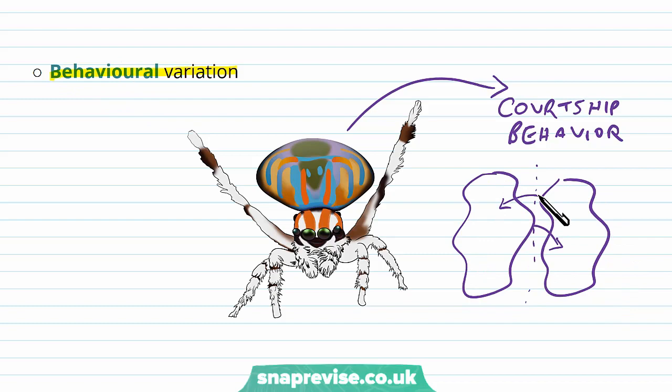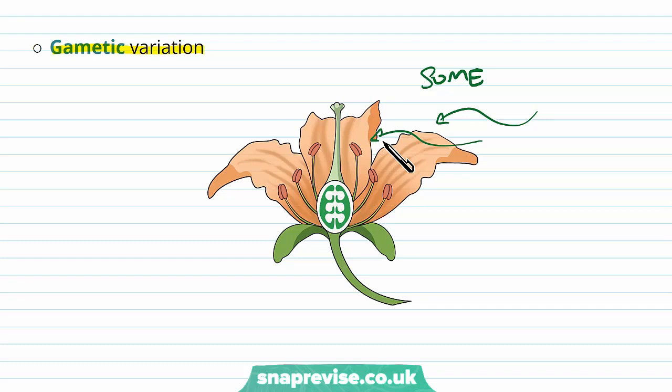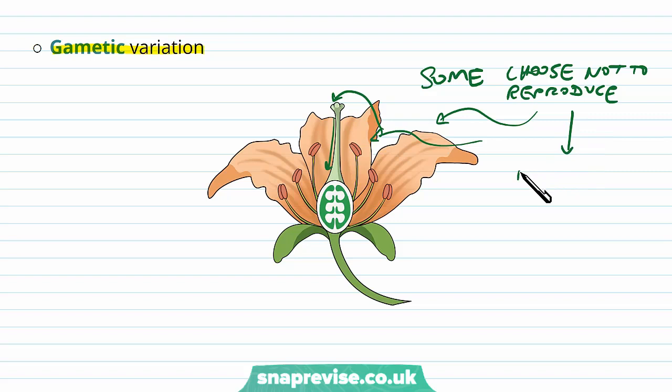There is also variation in the gametes, or gametic variation. For example, sunflowers don't like to be pollinated by particular genetic traits. If pollen lands on the stigma it would usually pollinate to form the new egg, but some plants are selective in what they respond to and may reject the genetics of the pollen that has landed. Some plants choose not to reproduce in response to particular genetic setups. Because there is variation in the gametes — the pollen and the egg — they may not reproduce, and if this divides the group into two, this forms two new species.